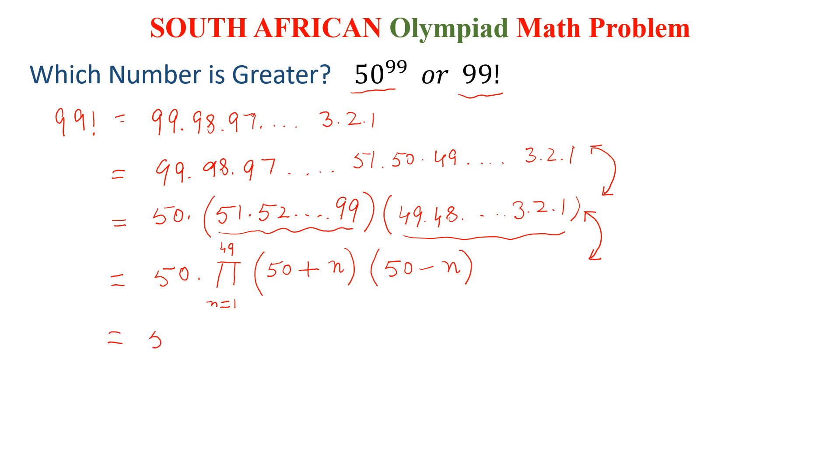Next, we can write 50 into the multiplication from 1 to 49 and we can write 50 square minus n square. So here is the trick.